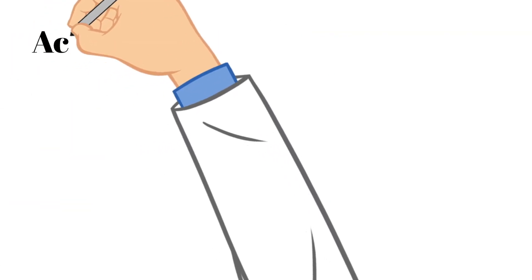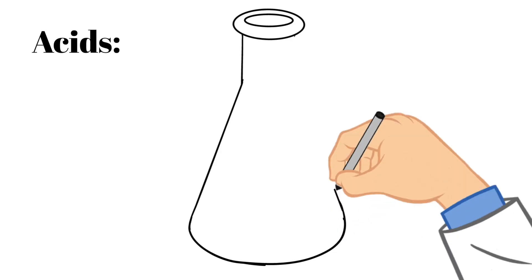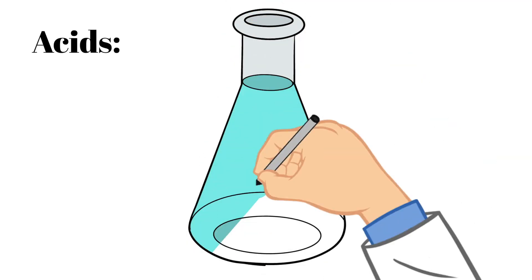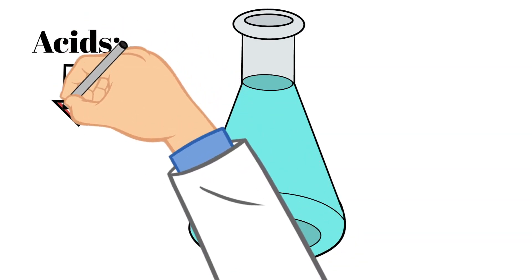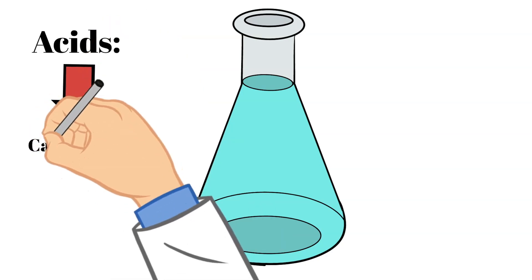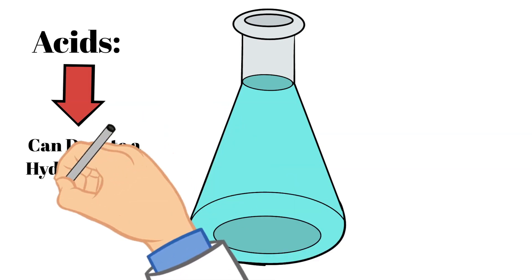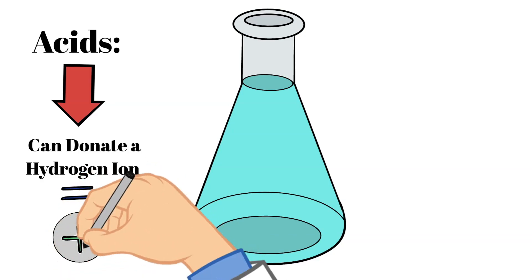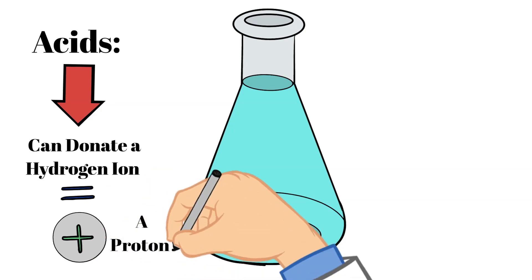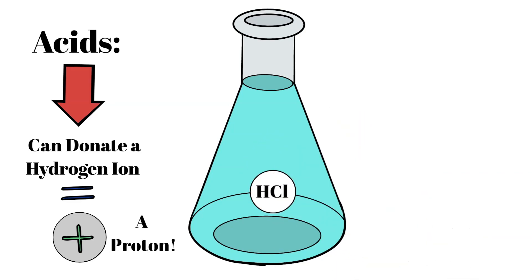So let's dive into talking about acids. What makes acids different than bases? Well, acids can lose or donate a proton, which is the same thing as a hydrogen ion, right? Because if the hydrogen atom lost its electron, it just has one proton and one positive charge. So a proton and a hydrogen ion are the same thing. And these acids can donate this hydrogen ion when combined with other substances, such as water.